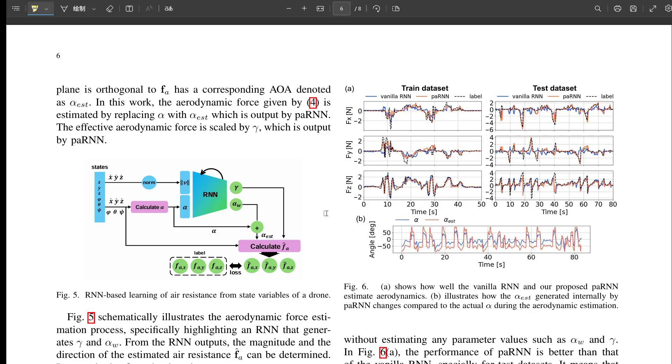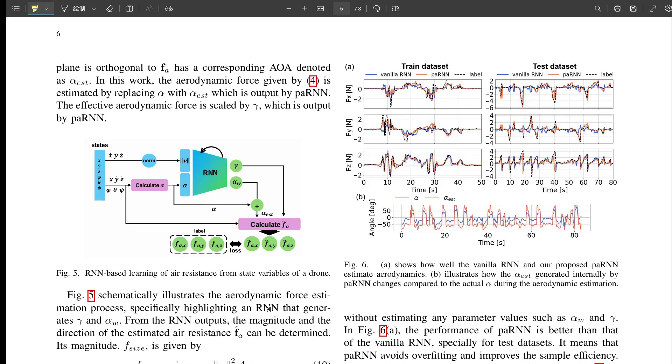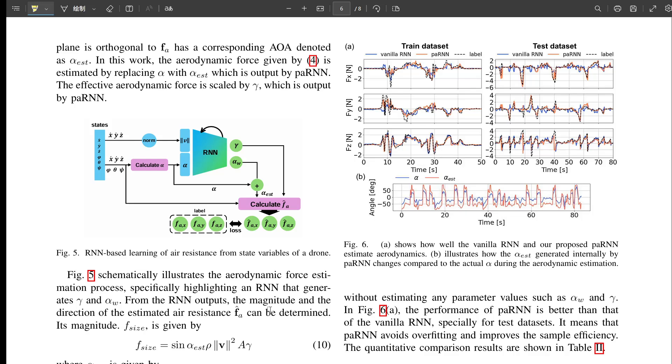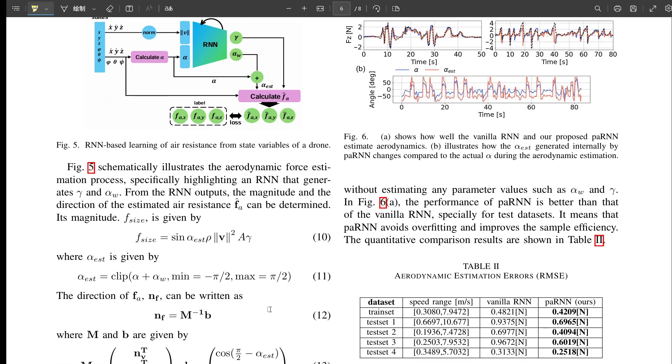That sounds really powerful. Why bother with the physics part? What's the advantage over just letting a standard RNN learn everything? Several big advantages. First, embedding physics makes the peron-N more robust. It's less sensitive to noise or weird biases in the flight data it learns from. Okay. Second, it's more sample efficient. It needs less flight data to learn an accurate model, which saves time and effort in testing. Right. Less trial and error flying. Exactly. And maybe most importantly, scientifically speaking, it helps prevent overfitting.